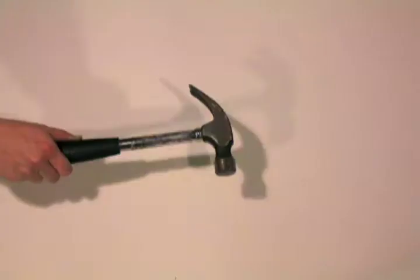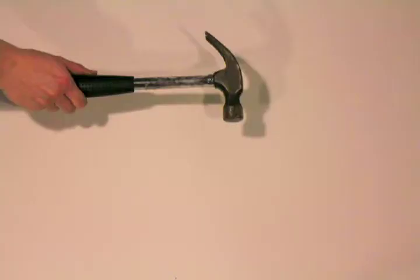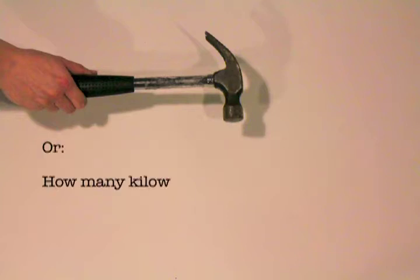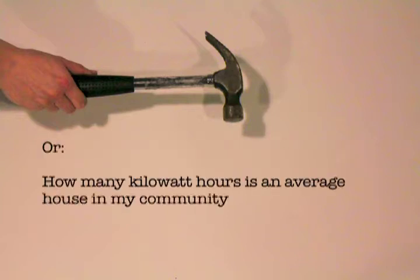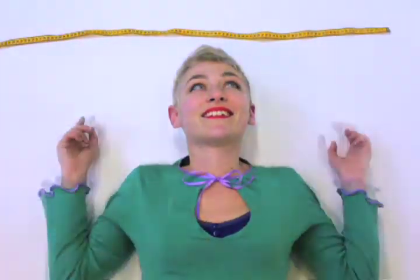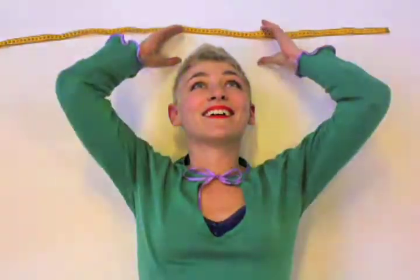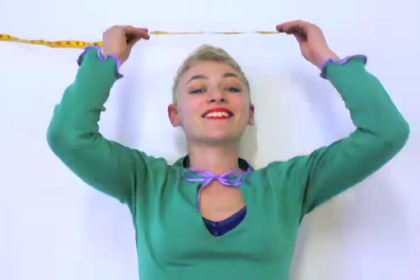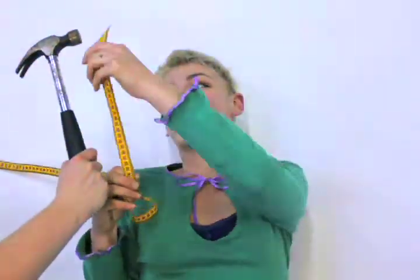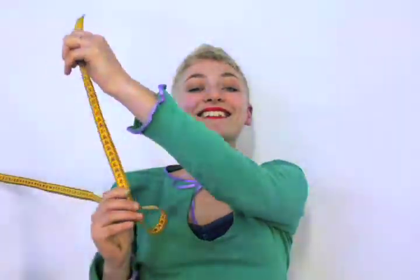Hard indicators are generally facts and figures. For example, how many miles do my community travel in cars each week? Or how many kilowatt hours is an average house in my community using over a three month period? These are the most important indicators because they are measurable and will help you to be able to work out all the important changes you've made in CO2 emissions.